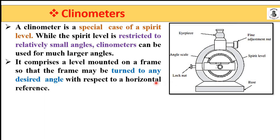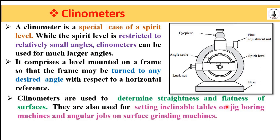Clinometers are always measured with respect to the horizontal reference. They are used to determine the straightness and flatness of any kind of surface. They are also used for alignment tests, for setting inclinable tables on jig boring machines, and for angular jobs on surface grinding machines — these are the different applications in both measurement and machining processes.